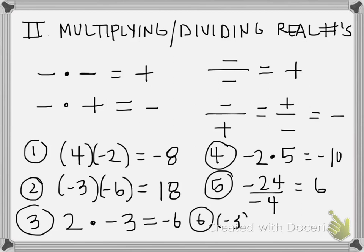Negative three times a negative one times a negative two times a negative one — there are four negatives here. Three times one is three, two times one is two, three times two is six. An even number of negatives always gives a positive answer, so the result is positive six.